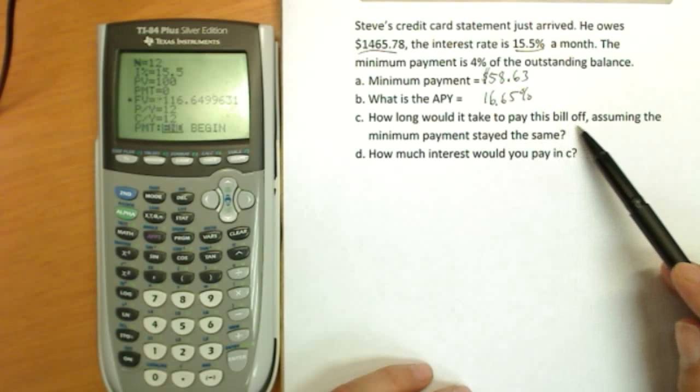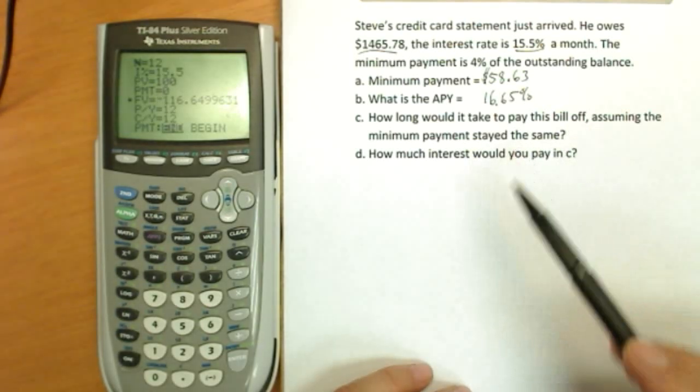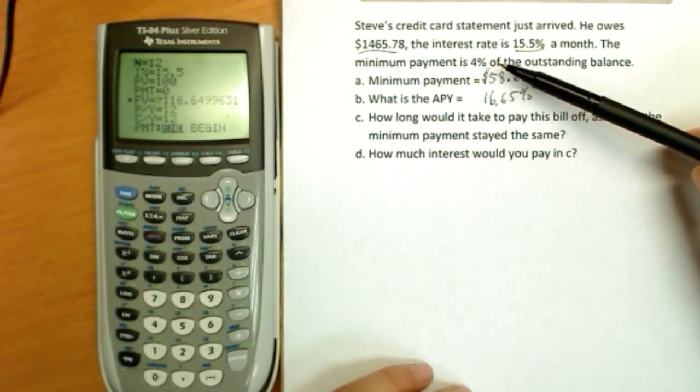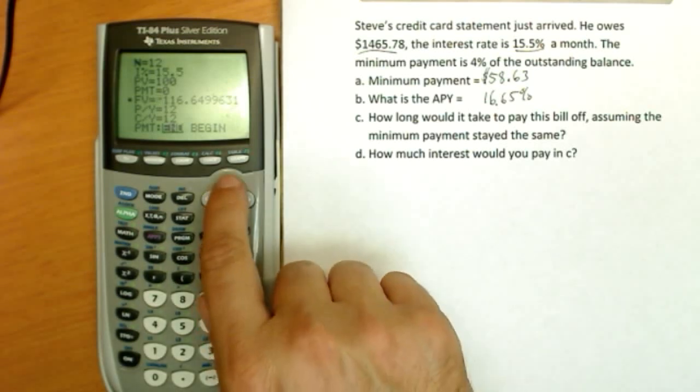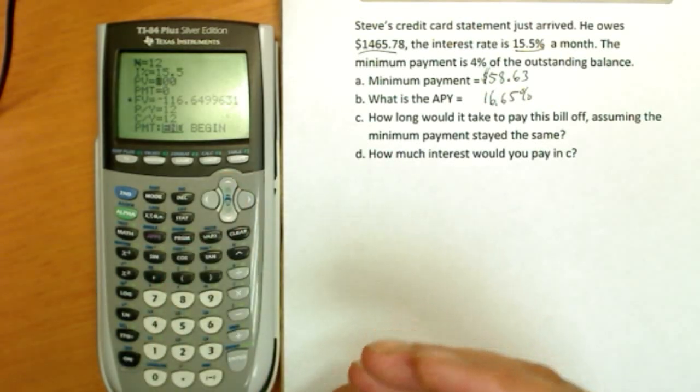Okay, how long would it take to pay this bill off assuming the minimum payment stayed the same? Now it won't really do that. If you didn't charge anything else, the minimum payment would go down by 4% each month. But we're not going to calculate that; there's no real easy way to do that. So what we're going to do in this case to answer question C is assume his minimum payment would actually stay the same. Obviously if it goes down each month, it could take you forever to pay this off.